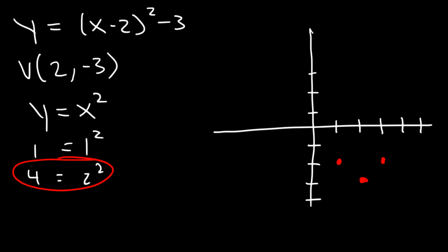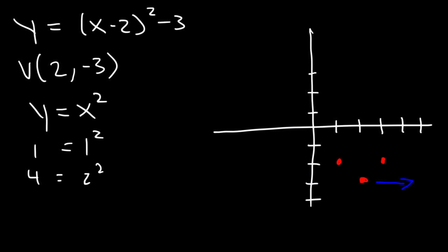Based on this, as you travel 2 units to the right from the vertex, to get the next point, go up by 4 units. And as you travel 2 units to the left, go up by 4. So on the right side it takes us to the point (4, 1), and on the left side we have the point (0, 1).